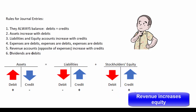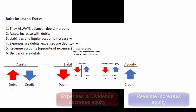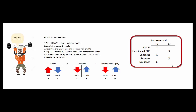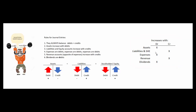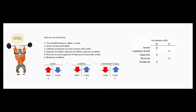Revenue makes stockholders' equity go up; expenses make stockholders' equity go down. A third way to remember these rules: every time before you sit down to do homework or take an exam, make a little chart. Assets increase with debits — easy to remember because debit means left and assets are on the left-hand side of the balance sheet.